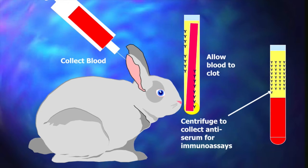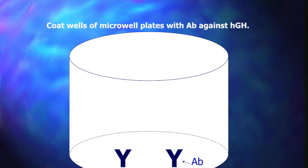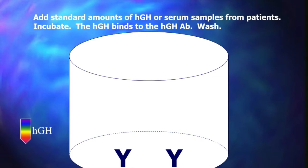Now we'll talk through how to perform a sandwich ELISA using the example of human growth hormone. First, coat the wells of the micro-well plates — like the ones we saw in an earlier picture — with an antibody against HGH. Then add the HGH or serum samples collected from patients, and incubate so that the HGH binds to the antibody.